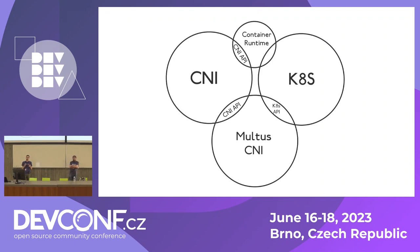Multus' value proposition is that it enables the pod to have multiple networking interfaces. On top of that, Multus understands Kubernetes — it speaks its API — and it also speaks the CNI API. So Multus is responsible for bridging these two things: it speaks Kubernetes natively and grants a pod the ability to have multiple interfaces.